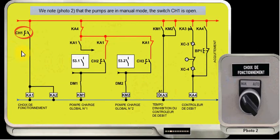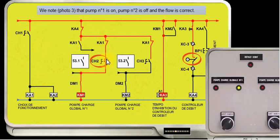We note photo 2 that the pumps are in manual mode. The switch CH1 is open. We note photo 3 that pump number 1 is on, pump number 2 is off, and the flow is correct.